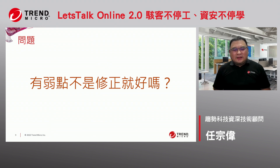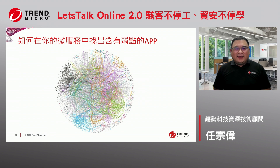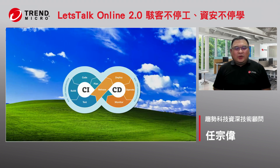大家应该会有一个疑问，这样的情况下，我有弱点来做一个修正就好了。这听起来好像对，但是以现在DevOps的状况来讲，其实都已经逐渐走到微服务的环境里面，我们开发的程式，或者我们去用Image跑出一个container，也许都是众多微服务里面中的一个点。我们如何在众多的微服务里面去找到哪一个app里面含有弱点？这不是不行，但是会耗非常大的resource。所以今天我们在谈DevOps的时候，我们如何在你的DevOps上面加上一个security？